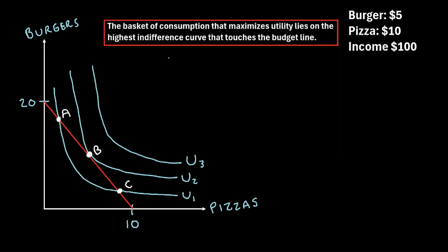So this is important to remember: the basket of consumption that maximizes utility lies on the highest indifference curve that touches the budget line. In this case, the highest indifference curve is U2, and that occurs at point B.